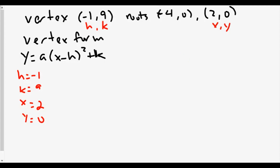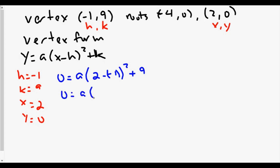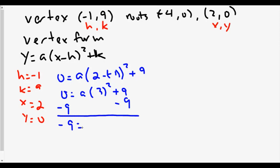Our Y value is zero. Our A value we're trying to solve for. Our X value is two, our H value is negative one. So: zero equals A times the quantity two minus negative one squared, plus nine. Two minus negative one is three, so three squared. We subtract nine from both sides to get A by itself: negative nine equals nine A. Divide both sides by nine and we get an A value of negative one.